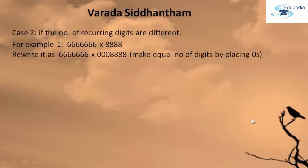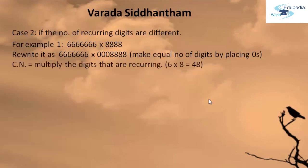After making equal number of digits in both the multiplicand and multiplier, we are going to find our three important key terms. Number 1 is CN — it is called the Comforting Number and it is brought up by multiplying the digits that are recurring. Here the digits that are recurring are 6 and 8. So 6 into 8 gives you 48.